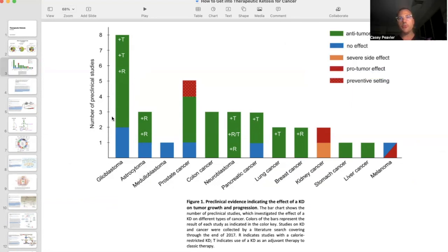The green would be an anti-tumor effect, blue would be zero effect, orange would be a side effect, red would be a pro-tumor effect, and then there's a preventive setting. For these first three are brain cancers, the glioblastoma multiforme being the most deadly, and then the astrocytoma meduloblastoma.